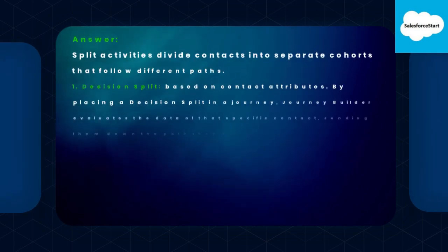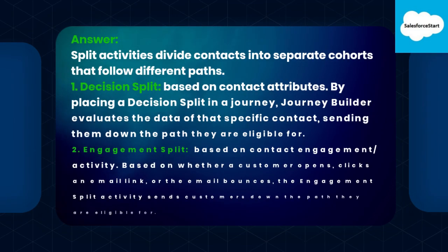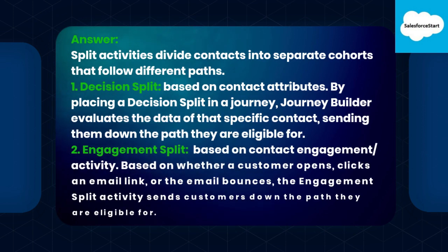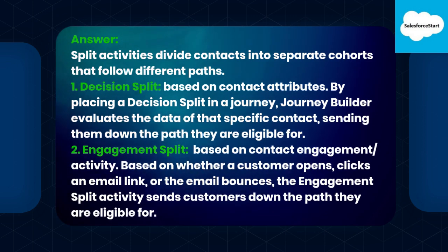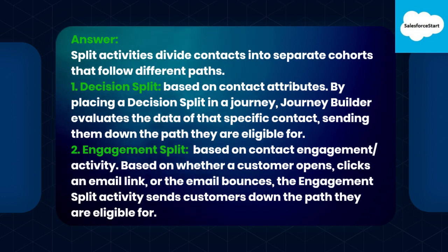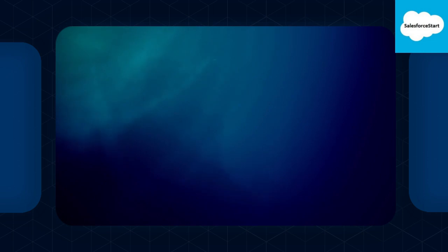Answer. The split activities divide contacts into separate cohorts that follow different paths. 1. Decision split — based on contact attributes. By placing a decision split in a journey, Journey Builder evaluates the data of that specific contact, sending them down the path they are eligible for. 2. Engagement split — based on contact engagement/activity. Based on whether a customer opens or clicks an email link, or the email bounces, the engagement split activity sends customers down the path they are eligible for.